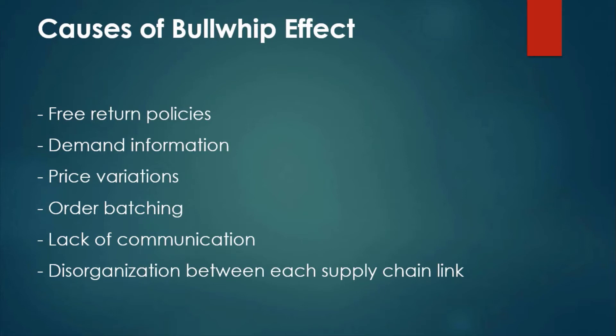Lack of communication between each link in the supply chain makes it difficult for the process to run smoothly. Managers can receive product demand information quite differently within different links of the supply chain and therefore order different quantities. Disorganization between supply chain links leads to ordering larger or smaller amounts of product than needed, due to overreaction or underreaction in supply chain forecasting.